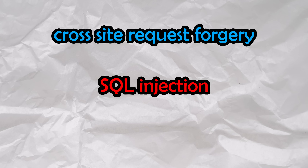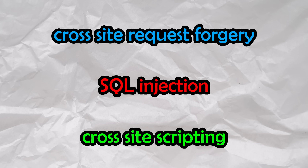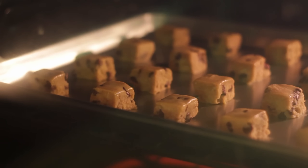Cross-site request forgery is the lesser known of the big three web attacks, with the other two being SQL injection and cross-site scripting. In order to understand the mechanics behind CSRF, we need to understand cookies, which are an integral part of the web.